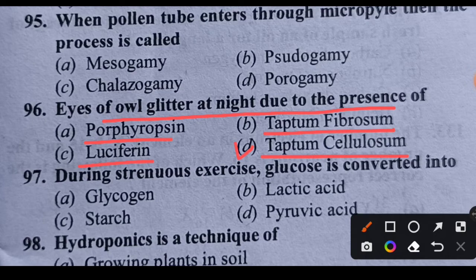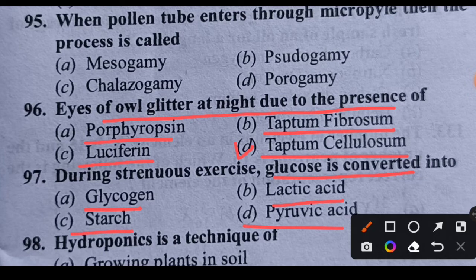Question 97: During strenuous exercise, glucose is converted into which substance? When we do exercise and we are tired, glucose is converted into what? Options: glycogen, lactic acid, starch, or pyruvic acid. Glucose is converted into lactic acid. Option B is correct.